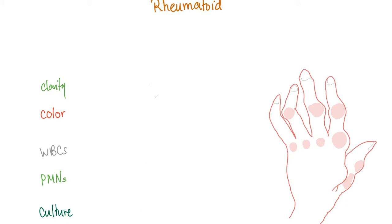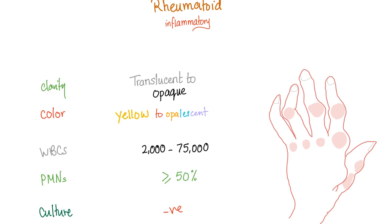Let's talk about rheumatoid baby. Again, clarity, color, white blood cells, PMNs, and culture. Now pause. Welcome back, people. Rheumatoid arthritis is an inflammatory arthritis, so the clarity translucent to opaque. Is this normal? No, it's not. What's the normal? The normal is transparent. Color. Yellow to opalescent, which means multiple colors. Is this normal? No. What was the normal? Colorless. Let's go to the white blood cells. 2,000 to 75,000. This is inflammatory. Is this normal? No. What was the normal? Less than 200. PMNs, greater than 50%. Is this normal? No. What's the normal? Less than 25%. Culture negative. This is inflammatory. There is no infection. There are just crazy autoantibodies all over the place.